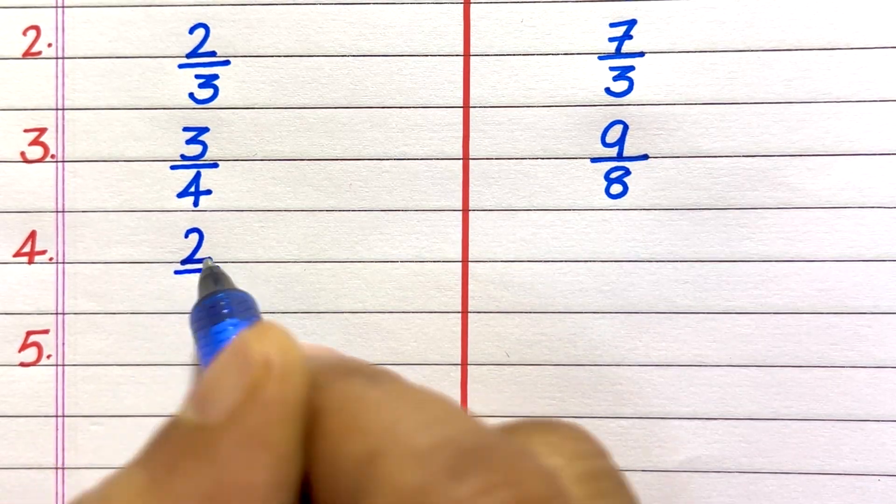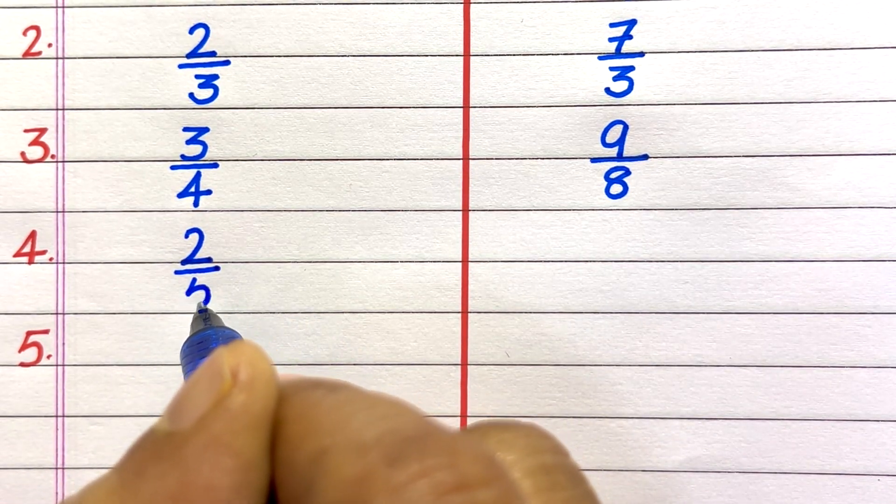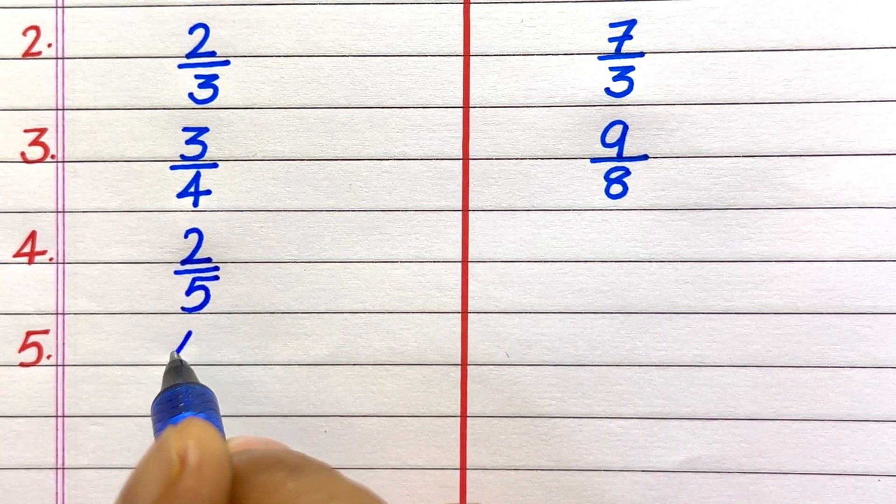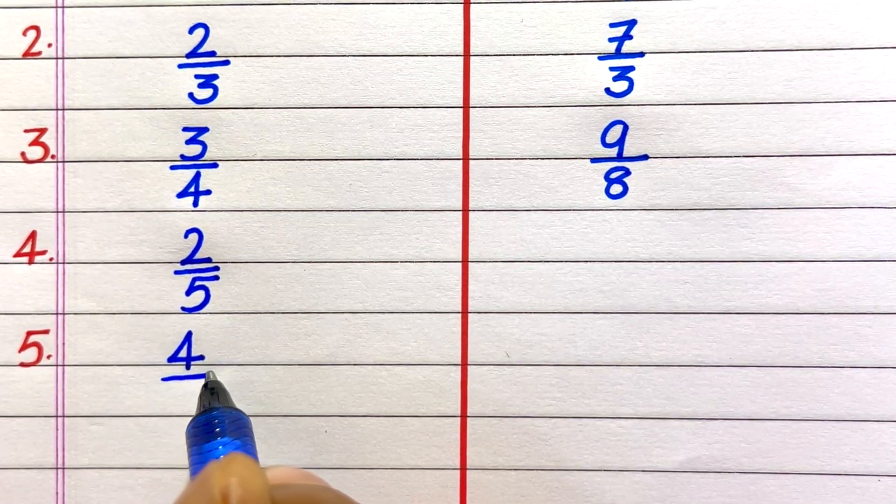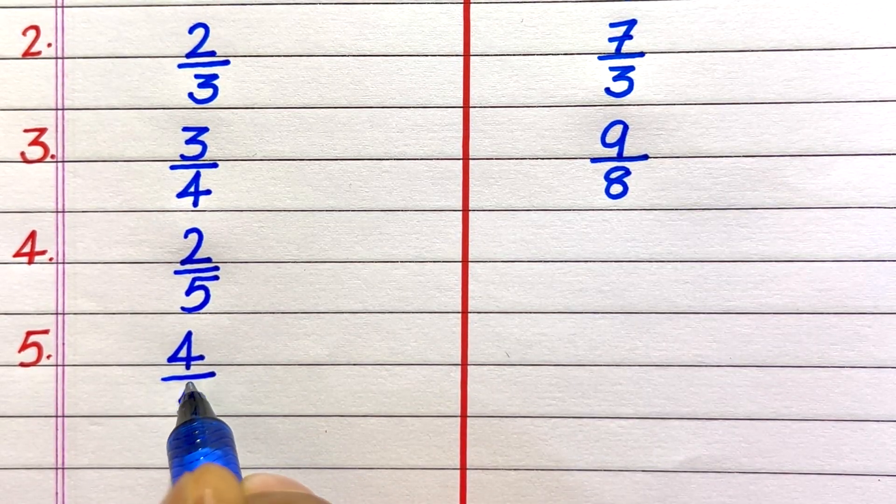Fourth example of a proper fraction is 2 by 5. Fifth, 4 by 5.